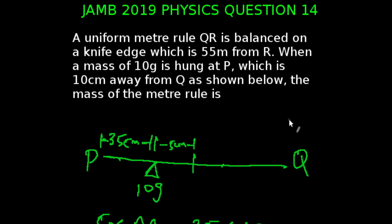We are looking at question 14 of the JAMB 2019 physics exams. A uniform meter rule Q is balanced on a knife edge, which is 55 cm from one end. When a mass of 10 gram is hung at P, which is 10 cm away from Q as shown below, the mass of the meter rule is